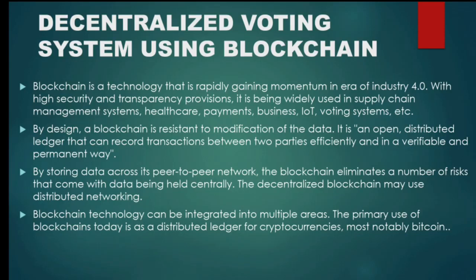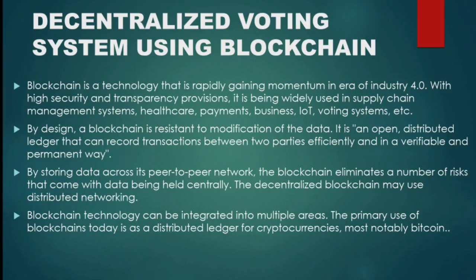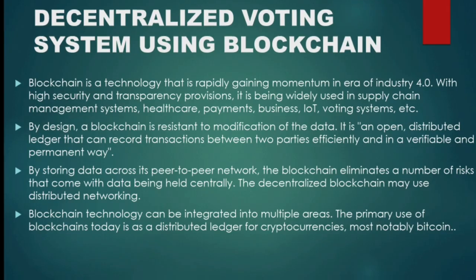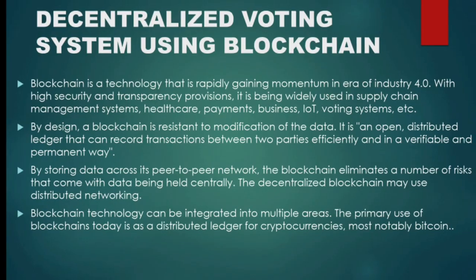By design, a blockchain is resistant to modification of the data. It is an open, distributed ledger that can record transactions between two parties efficiently and in a verifiable and permanent way. By storing data across its peer-to-peer network, the blockchain eliminates a number of risks that come with data being held centrally. The decentralized blockchain may use distributed networking. The primary use of blockchain today is as a distributed ledger for cryptocurrencies, most notably Bitcoin.